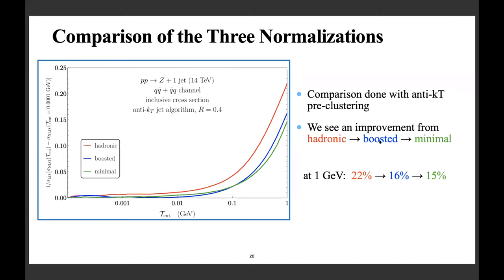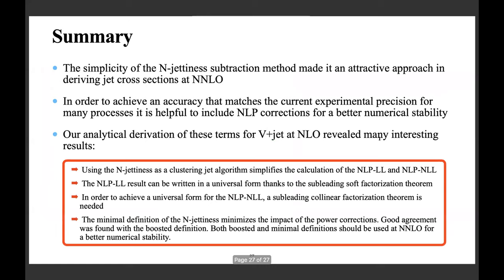In summary: using N-jettiness as the pre-clustering algorithm simplifies the calculation of power corrections. The next-to-leading power leading log result can be written in universal form thanks to the sub-leading soft factorization theorem. We cannot yet say the same about the next-to-leading log because we lack the sub-leading collinear factorization theorem — for those you still need the full matrix element. We also found that there are definitions — boosted and minimal — that minimize the power corrections and work well at the NNLO level.